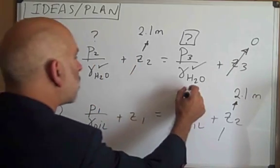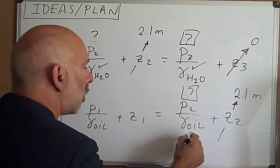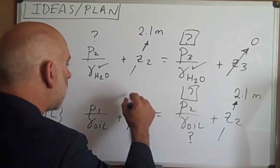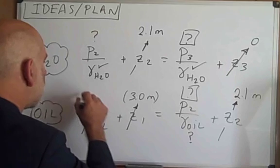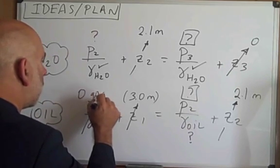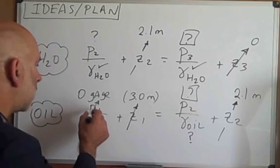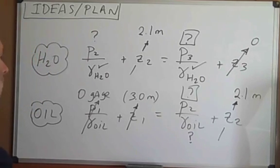The pressure at 2 is our goal. The specific weight of the oil we don't know, although we know the specific gravity. The elevation of 1 is 3 meters and the pressure at 1 is zero gauge because that point is located at the top surface.